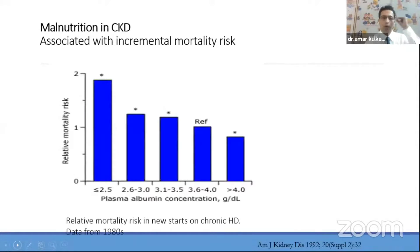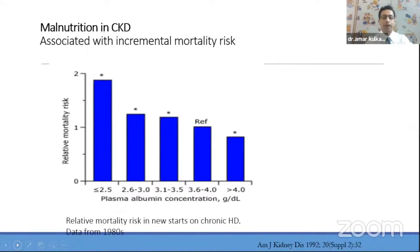Almost all patients are malnourished as CKD progresses. Unfortunately, patients from lower socioeconomic backgrounds often do not address this malnutrition. As serum albumin level falls from 4 to 2.5 grams, the mortality risk increases substantially. Hypoalbuminemia is a direct predictor of malnutrition and, directly or indirectly, a predictor of death in these patients.